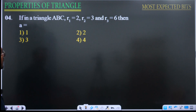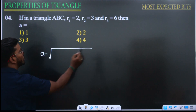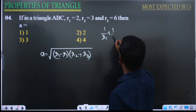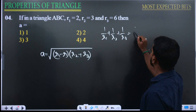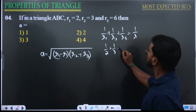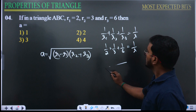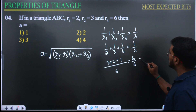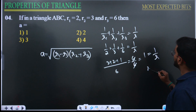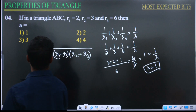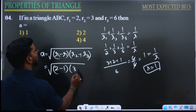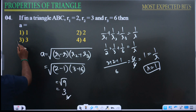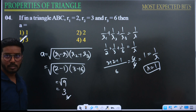Next question: r1, r2, r3 are given, find side a. Formula: a equals root of (r1 minus r)(r2 plus r3). Using 1/r1 plus 1/r2 plus 1/r3 equals 1/r with values 1/2 plus 1/3 plus 1/6: LCM is 6, giving (3 plus 2 plus 1)/6 equals 6/6 equals 1, so r equals 1. Then a equals root of (2 minus 1)(3 plus 6) equals root of 1 times 9 equals root 9 equals 3.